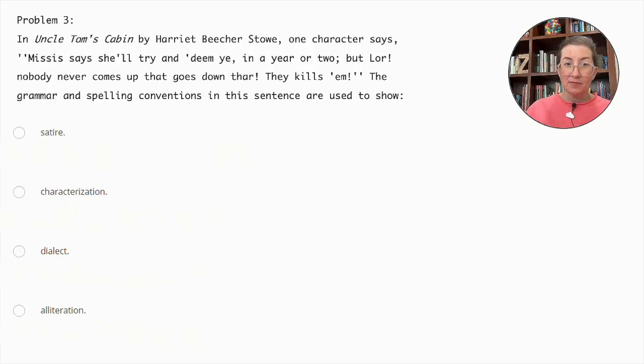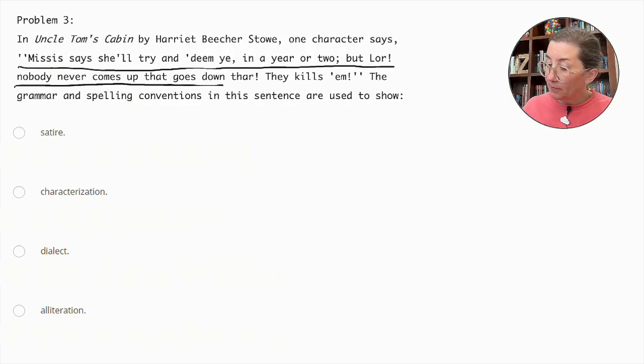Problem number three. In Uncle Tom's Cabin by Harriet Beecher Stowe, one character says, 'Missis says she'll try and 'dees us, in a year or two; but Lor! nobody never comes up thar! They kills 'em!' The grammar and spelling conventions in this sentence are used to show: satire, characterization, dialect, or alliteration.